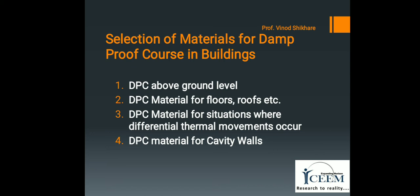Third is damp proof course material for situations where differential thermal movement occurs — in parapet walls and other such situations. Materials like mastic asphalt, bitumen felt, and metal are recommended. The metals used are copper or lead. It is important to ensure that the DPC material is flexible so as to avoid any damage or puncture due to differential thermal movement between the material of the roof and the parapet.